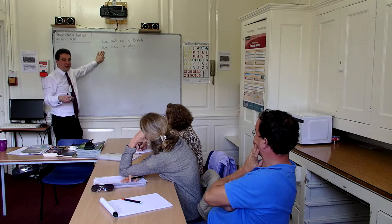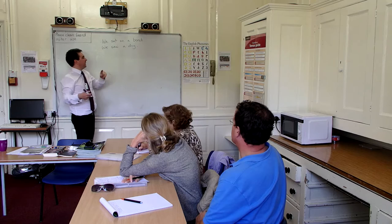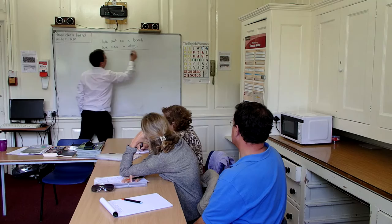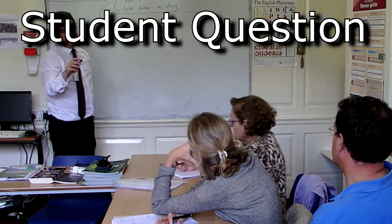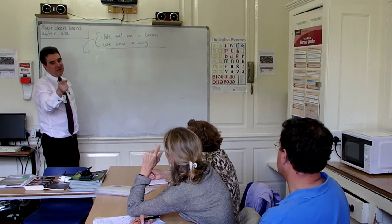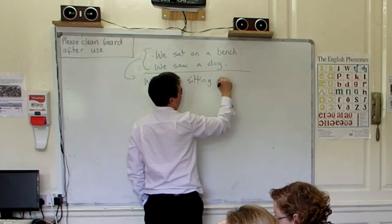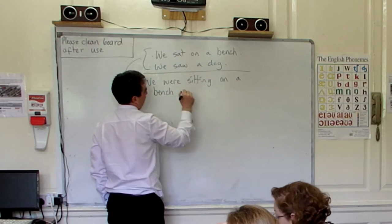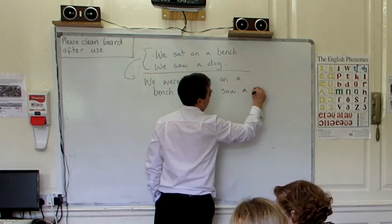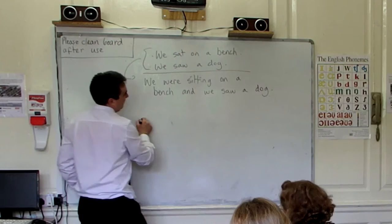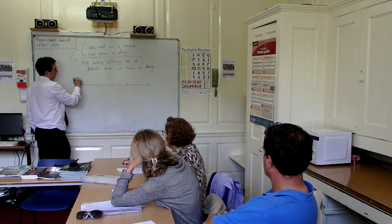So when you have two sentences — 'we sat on a bench, we saw a dog' — that's the sort of idea. How do you join these sentences? I will show you. So: we were sitting on a bench and we saw a dog.